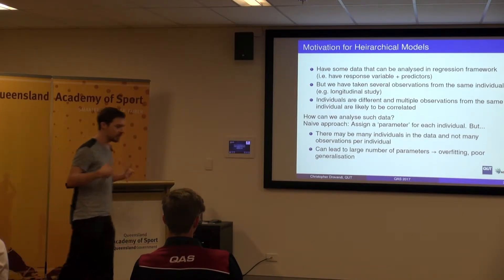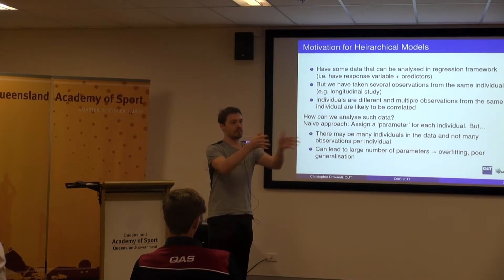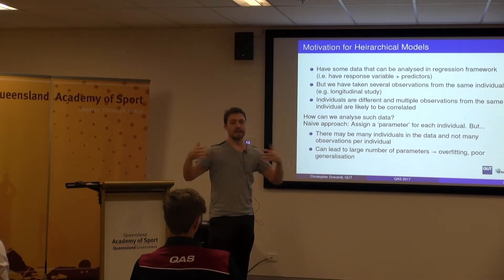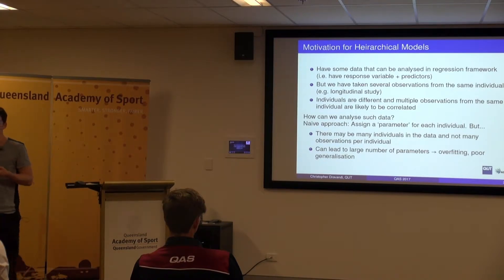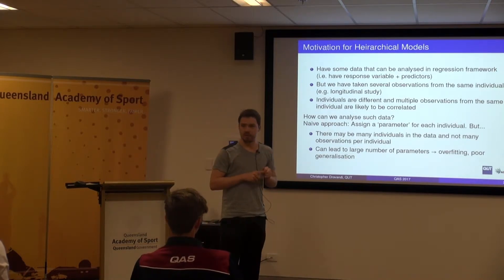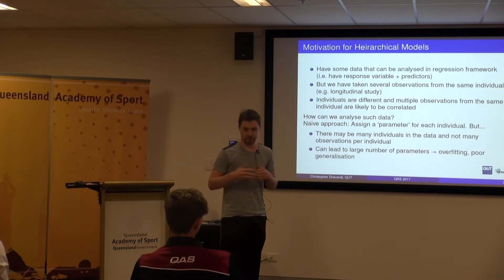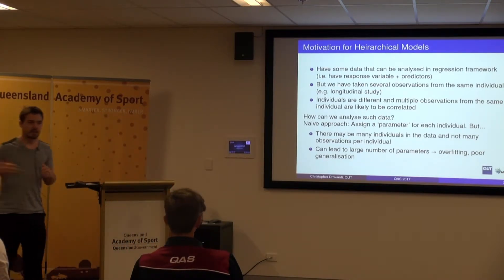So what's a naive approach to handle this kind of situation? The easiest thing would be to give each individual their own parameter — one for you, one for you, one for me — to explain the difference in variation in the data between individuals. But if we think about a data set where we have lots of individuals and not many observations on each of those individuals, we're going to have a very large number of parameters, which might lead to overfitting of the model. This is bad because we might end up explaining the noise in the data set rather than the signal.